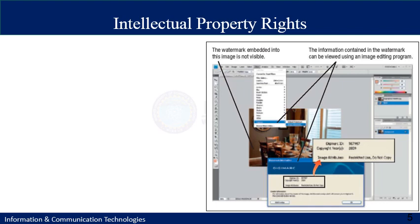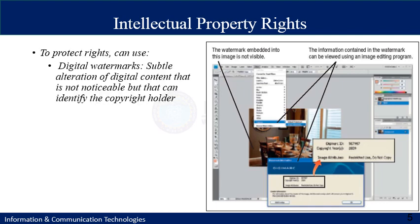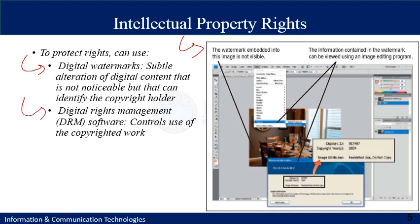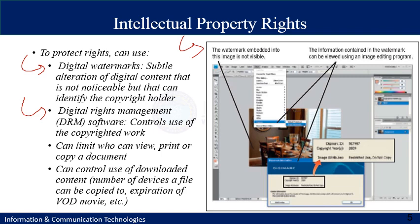Copyrights and intellectual property rights come in different forms. For example, a digital watermark can be embedded into an image — it is not visible but can identify the copyright holder. Intellectual property rights can be protected using digital watermarking, which is a subtle alteration of digital content that is not noticeable. Digital rights management (DRM) software controls the use of copyrighted work — you can limit who can view, print, or copy a document, and control the use of downloaded content, such as the number of devices a file can be copied to.